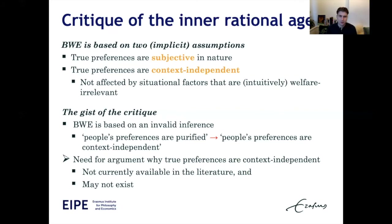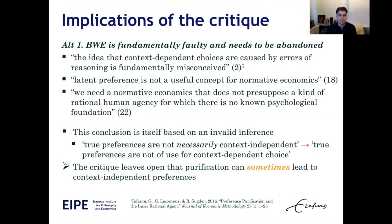The critique makes the point that behavioral welfare economics is based on an invalid inference: just because people's preferences are purified doesn't mean they will also be context independent. An argument is needed for why true preferences would be context independent, and such an argument is not available in the literature and may not exist. The critics give examples where a person with true preferences could still make context-dependent choices without breaking any norms of rationality. The question then is: what implications should we draw from this critique? Here the critics are somewhat vague. On one reading, you get the impression that behavioral welfare economics is fundamentally flawed and needs to be abandoned.